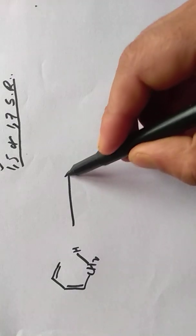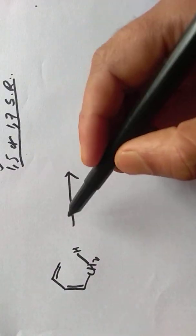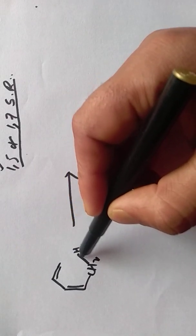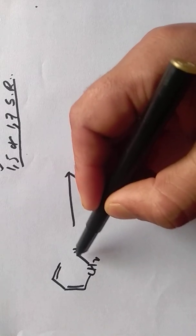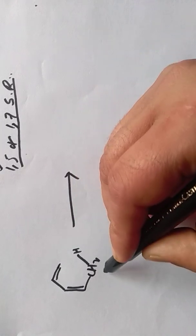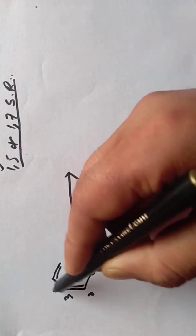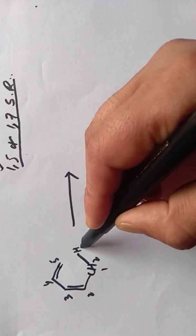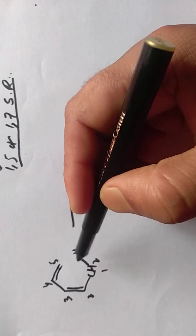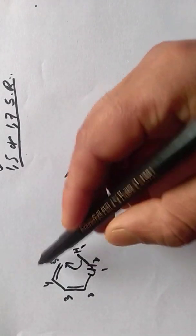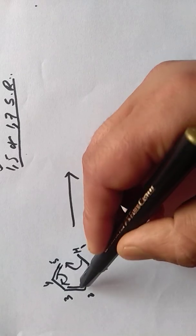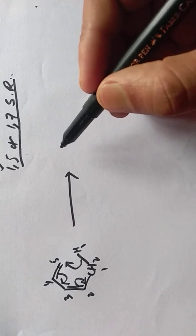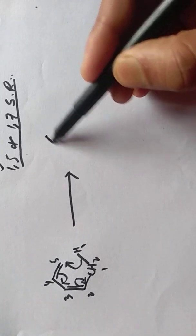This is a 1,5 sigmatropic rearrangement. In this case, this bond is an allylic bond, so we start numbering from this allylic bond on both sides: 1, 2, 3, 4, 5, and 1. What happens is this one shifts to this side, this one shifts to this side, and this one shifts to this side, so we get the product like this.